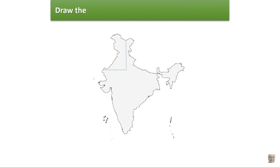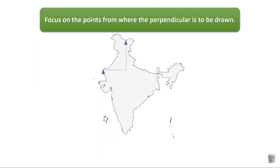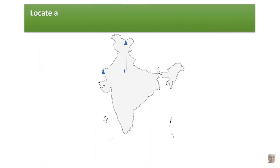Draw the imaginary perpendicular lines as shown. Focus on the points from where the perpendicular is to be drawn. Locate a mark outside the angle of the perpendicular lines, away from the joint, and place it towards your left.